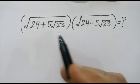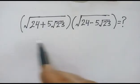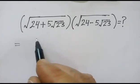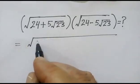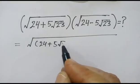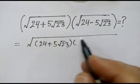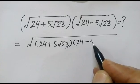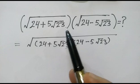Hi friends, today we have this problem. How to solve it? First, we will do square root of 24 plus 5 square root of 23, multiplied by square root of 24 minus 5 square root of 23.